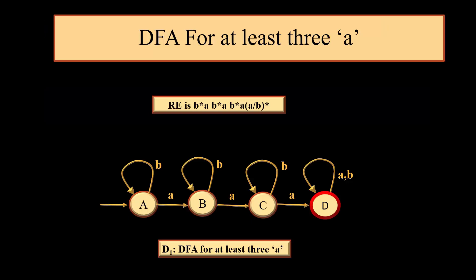To start with, if we consider at least 3a, there is restriction on a, no restriction on b. So the regular expression will be b star a b star a b star a into (a or b) whole star, which is a universal string. We have designed the DFA for this particular regular expression and named it D1.